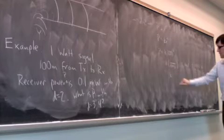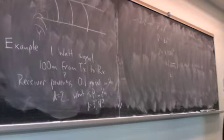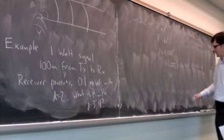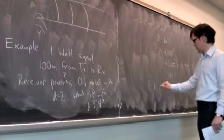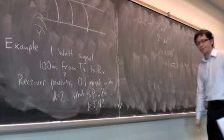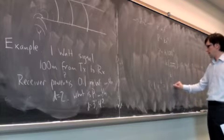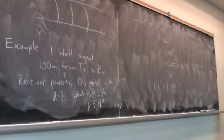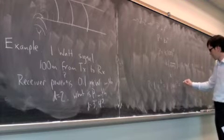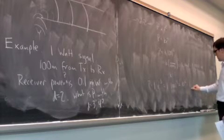For d equals 3, p is equal to 1 times r to the minus 3, which is equal to 1 times 100 to the minus 3, which is equal to 10 to the minus 6, which is 1 microwatt.